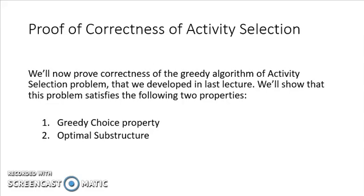We will prove the correctness of the activity selection problem in two parts. First, we show that this problem satisfies the greedy choice property, which means that the greedy choice we make at every step is actually part of some optimal solution. Second, we show that this problem has the optimal substructure property, meaning the optimal solution is made up of the optimal solutions of its sub-problems.